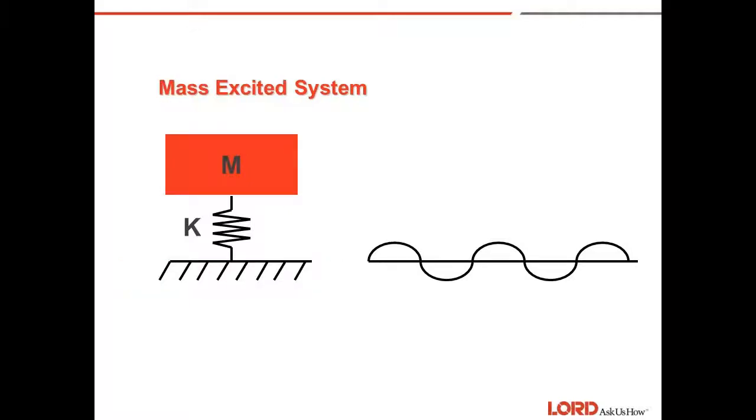The other system is a mass excited system. In a mass excited system, the mass itself is vibrating, the input, and we are concerned with the output to the base. For example, a vibrating air conditioner may be suspended on isolator springs to keep it from transmitting vibration to the floor of a building. In both cases, transmissibility is measured the same way, as are the calculations for natural frequency.